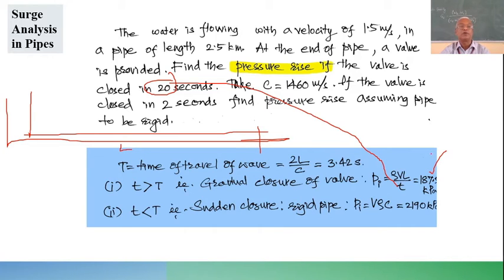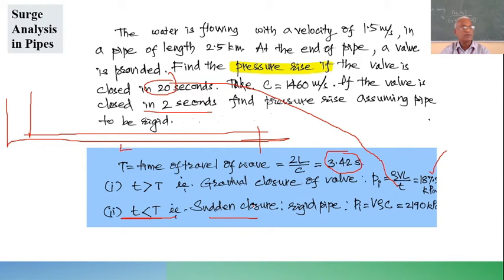Second case: find the pressure rise if the valve is closed in 2 seconds, assuming the pipe is rigid. Since 2 s < 3.42 s, this is sudden closure. For a rigid pipe, P_i = ρVc = 1000×1.5×1460 = 2194 kPa. Note the huge range: 187.5 kPa for gradual versus 2194 kPa for sudden closure — sudden closure is very dangerous.